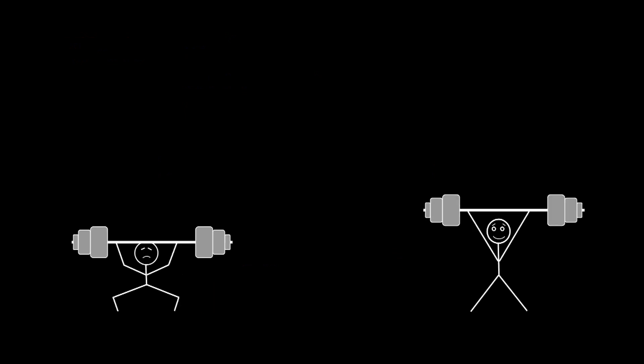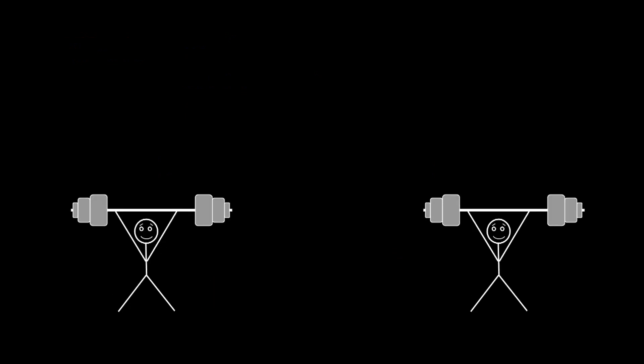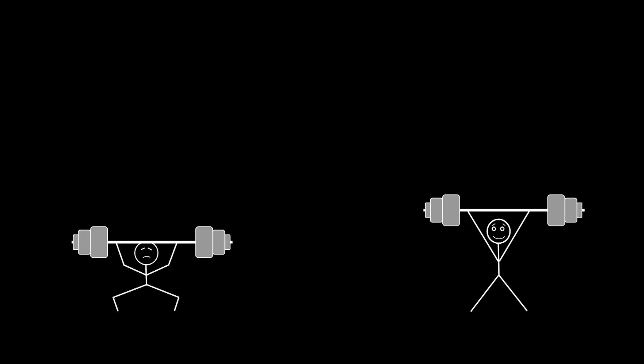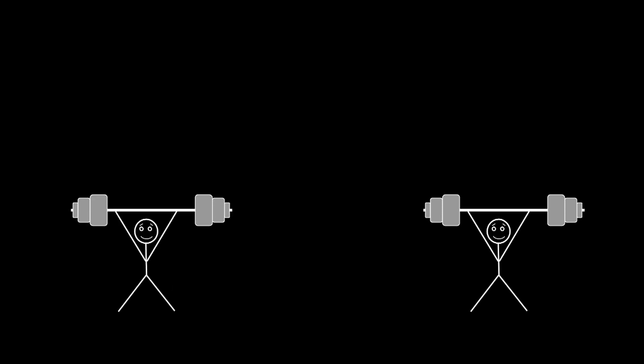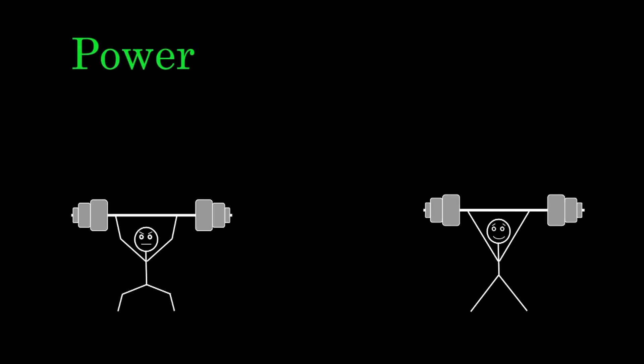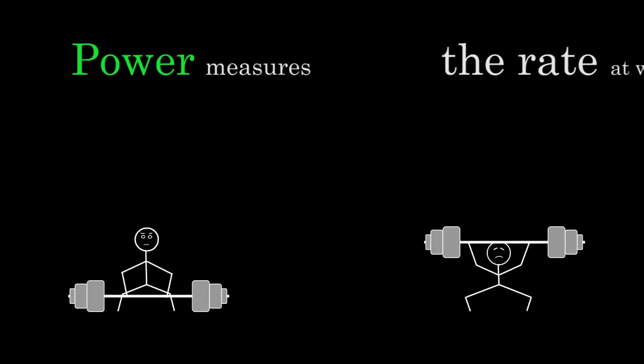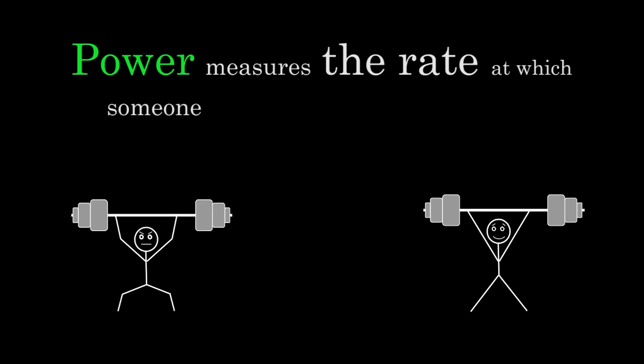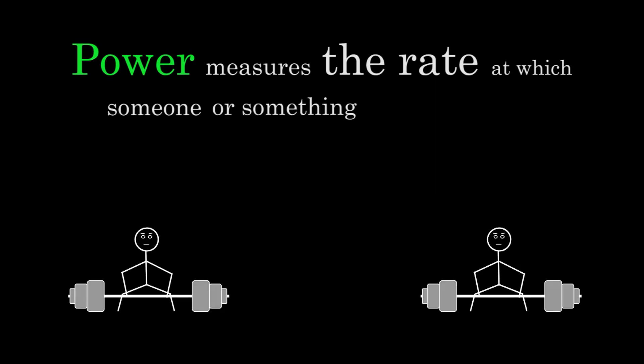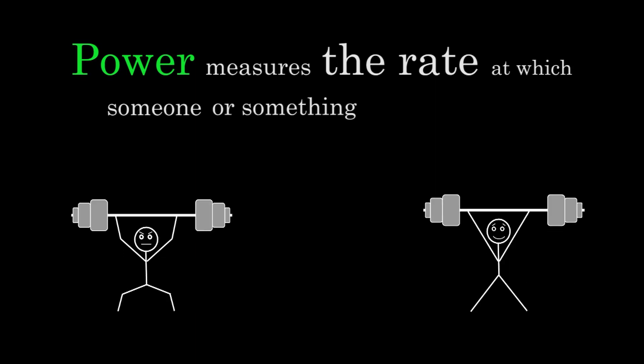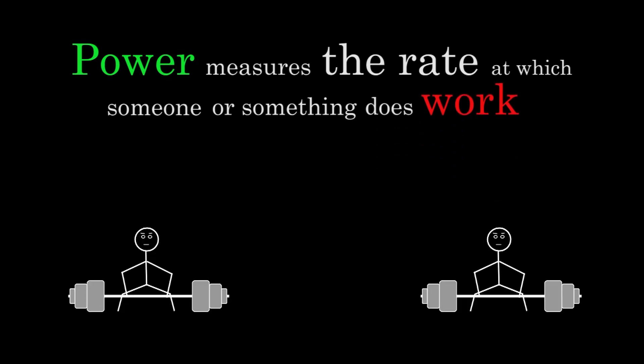But the weightlifter on the right is lifting his weight faster and there should be a way to distinguish between what he's doing and what the other slower weightlifter is doing. We can distinguish their actions in physics by talking about power. Power measures the rate at which someone, like these weightlifters, or something, like an automobile engine, does work.